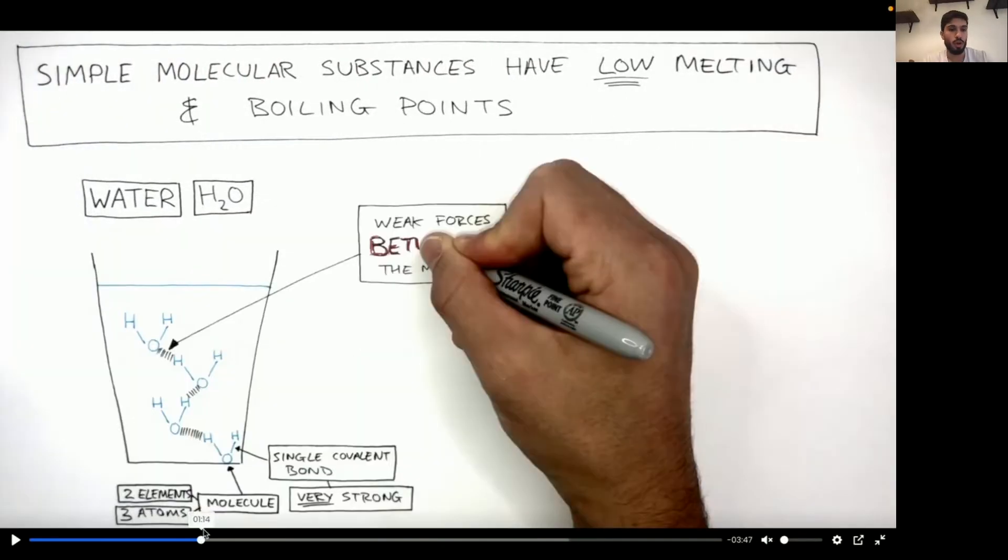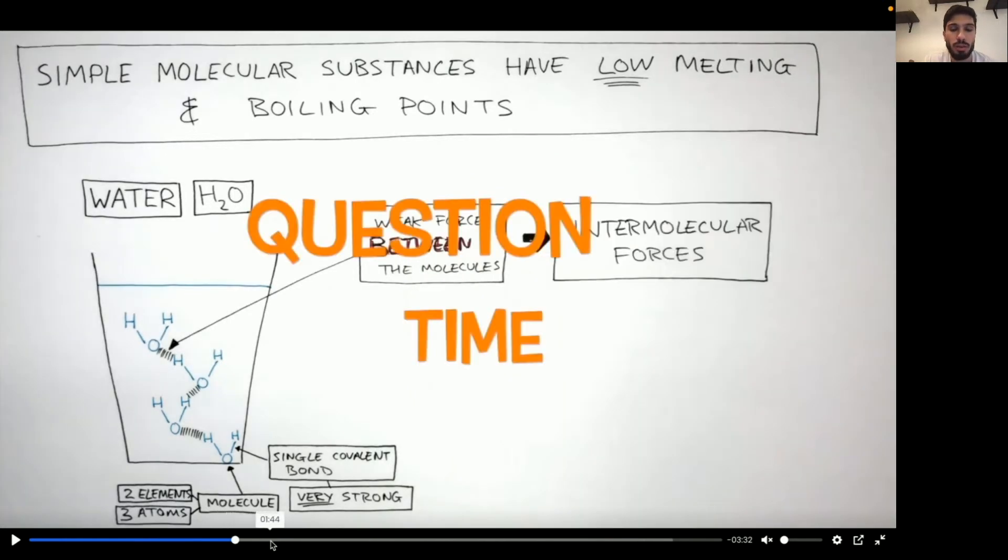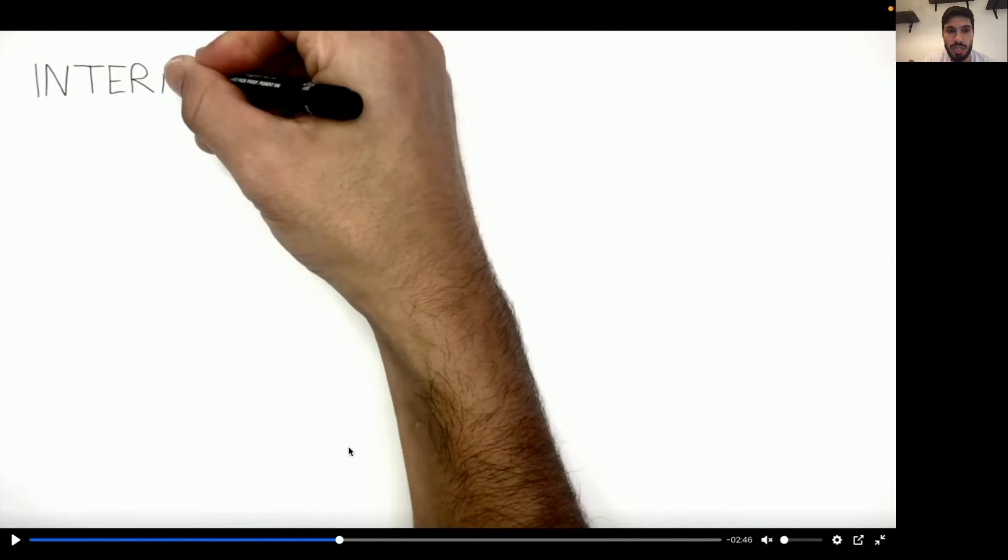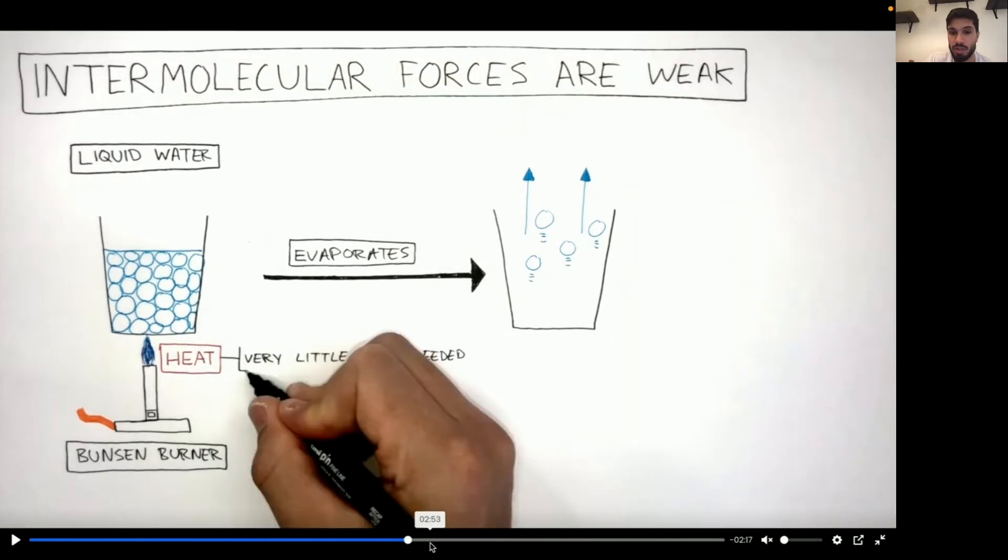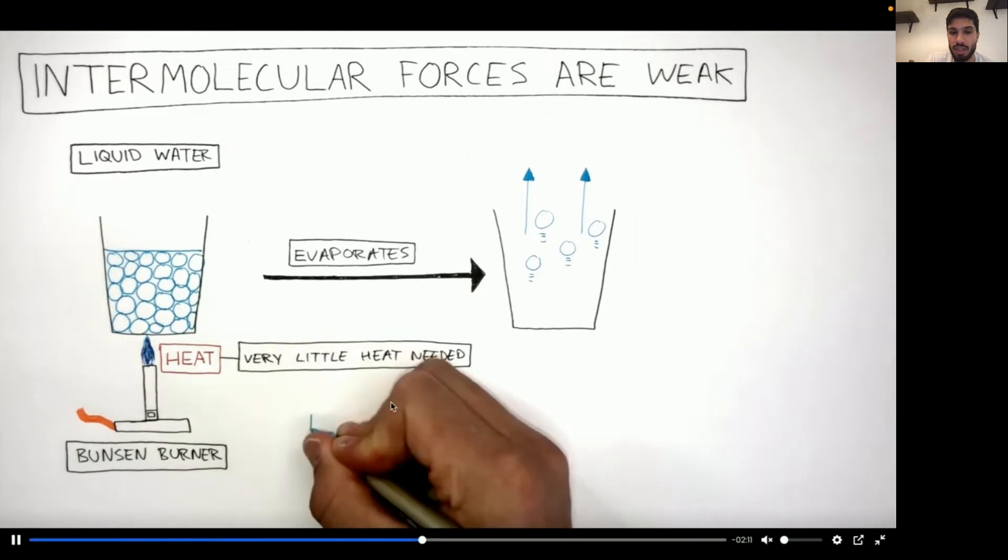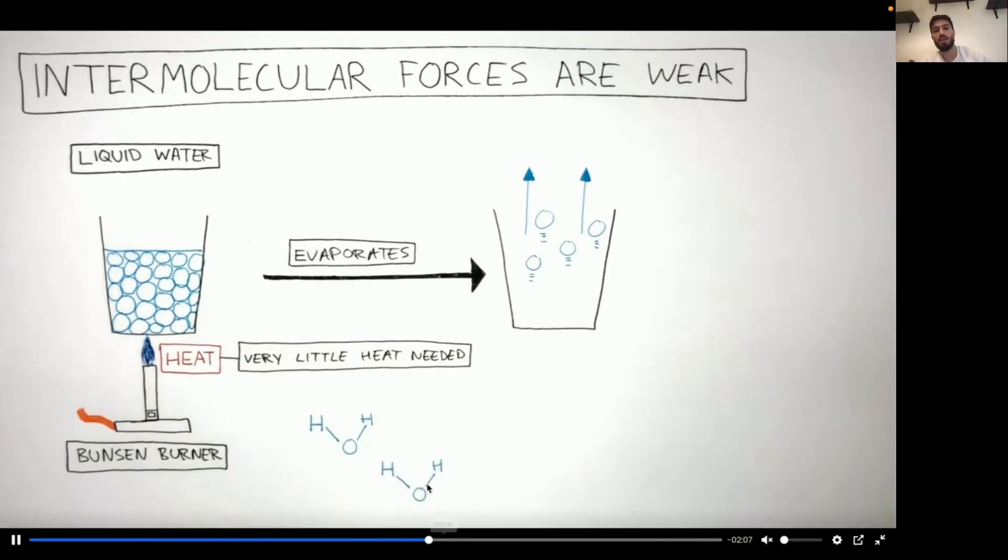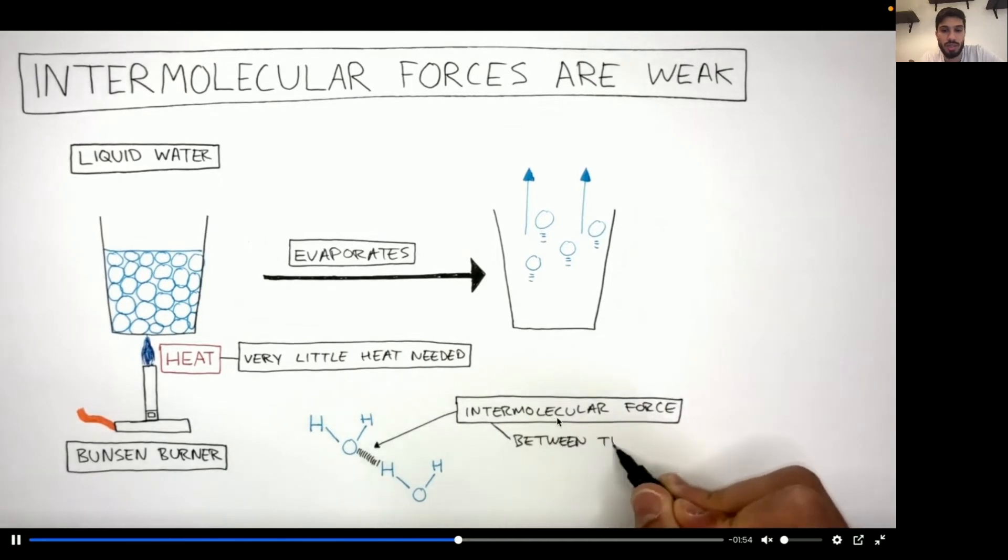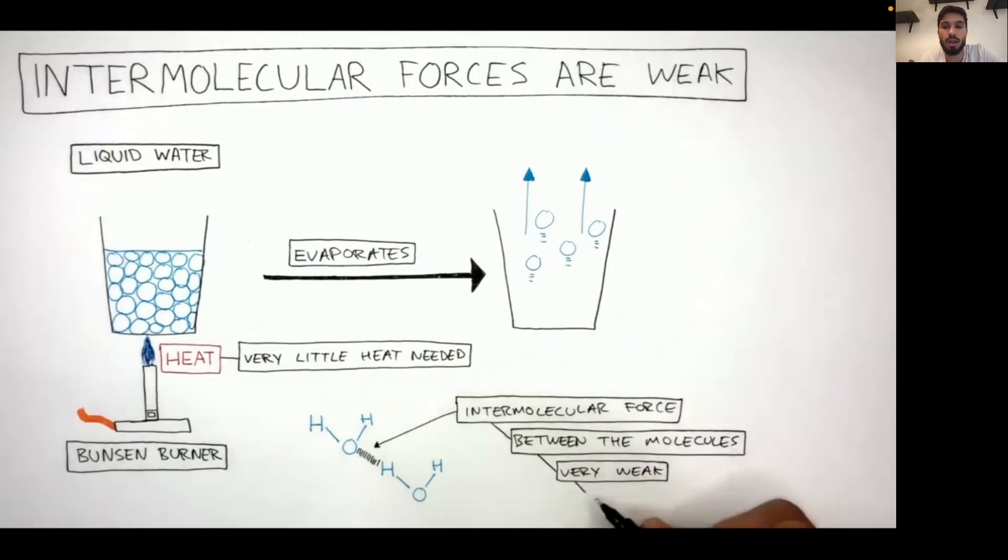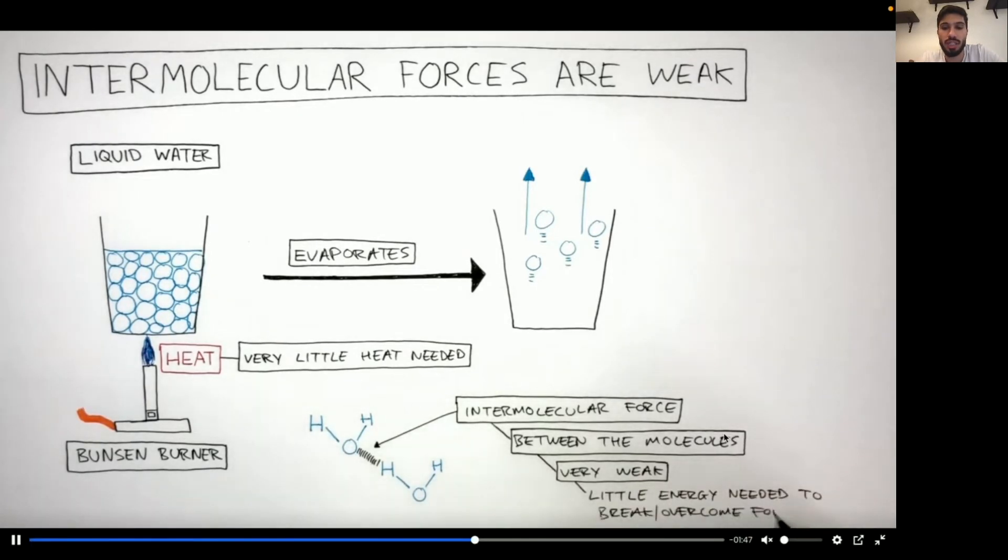So in between these molecules, we have weak forces called intermolecular forces. Now, because they're weak, I'm going to just skip a little bit. Because they're weak, this means when we heat this liquid water, little energy is required to break the intermolecular forces. So this means that in this case is water. Water easily evaporates. So look, very little energy or heat is needed to break the weak intermolecular forces in between the molecules. So these intermolecular forces between the molecules are very weak, needing little energy to break or overcome them.